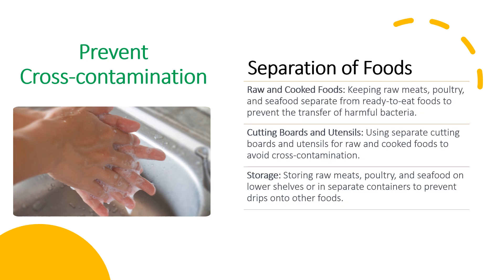Separating different types of foods is crucial to prevent cross-contamination. Keep raw meats, poultry, and seafood separate from ready-to-eat foods to prevent the transfer of harmful bacteria. Use separate cutting boards and utensils for raw and cooked foods. Store raw meats, poultry, and seafood on lower shelves or in separate containers to prevent drips onto other foods.